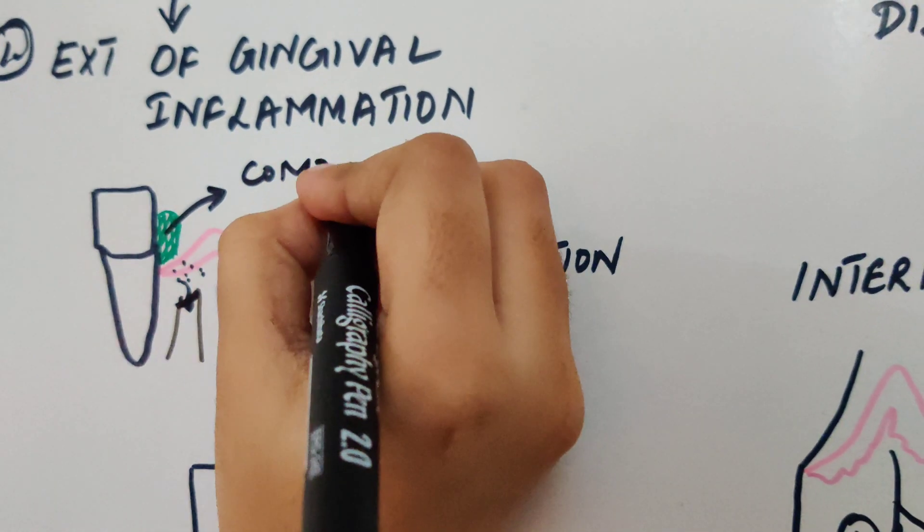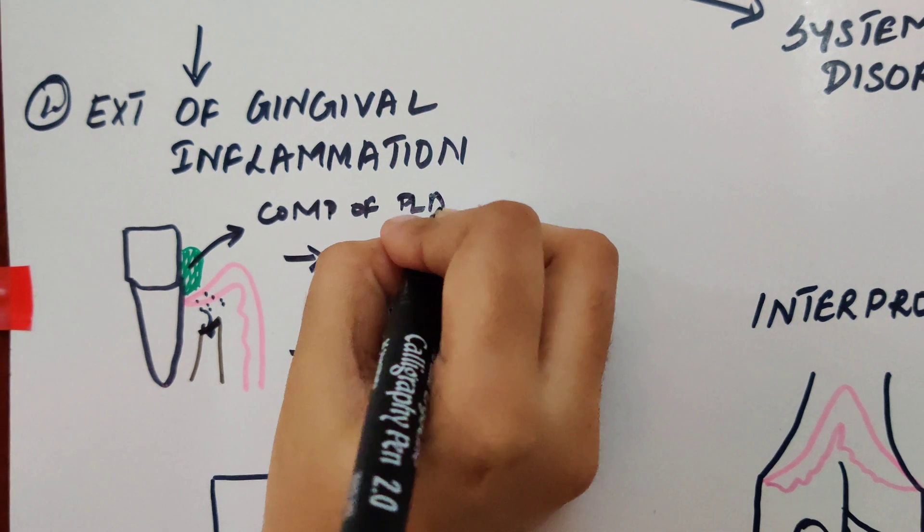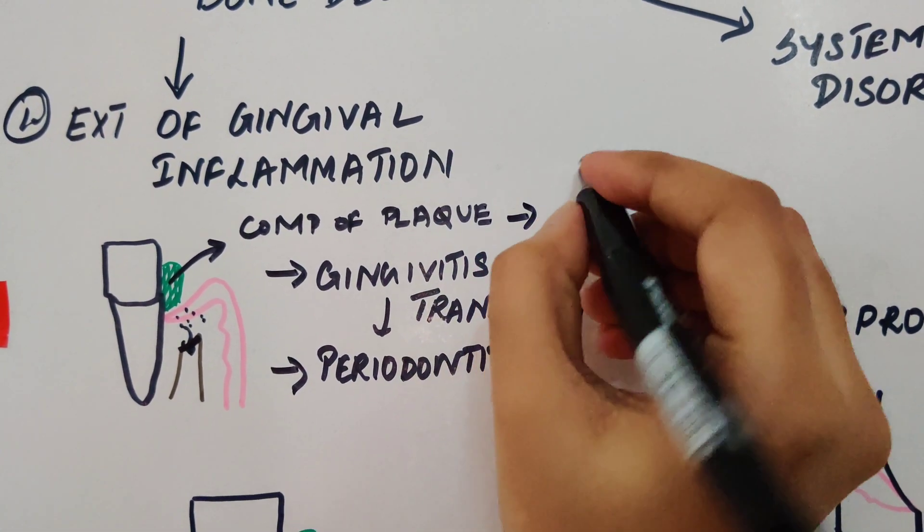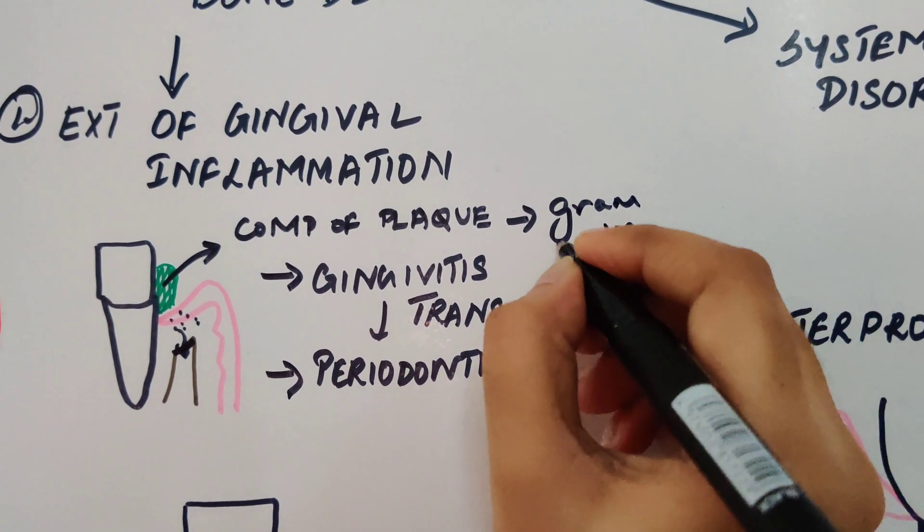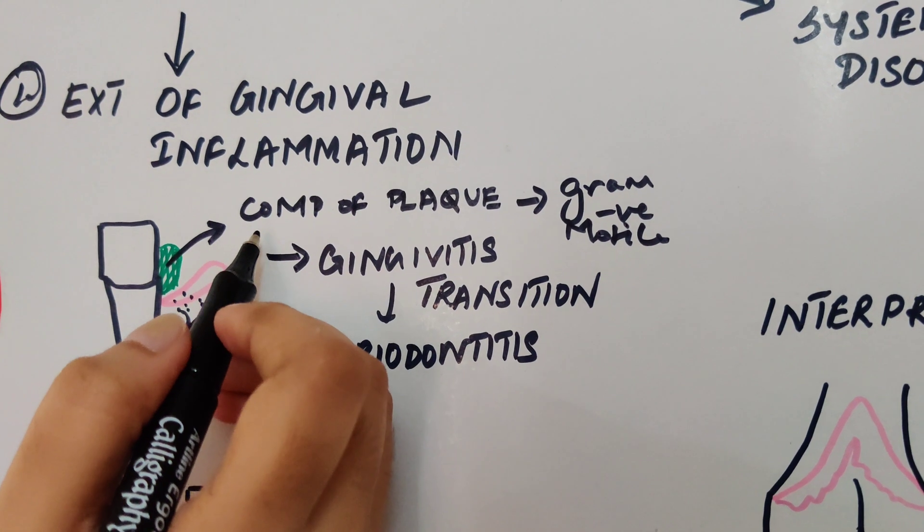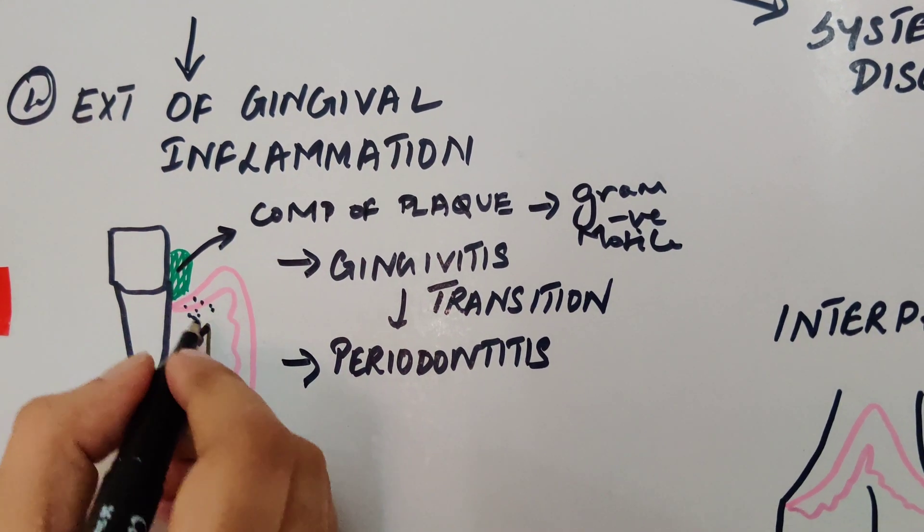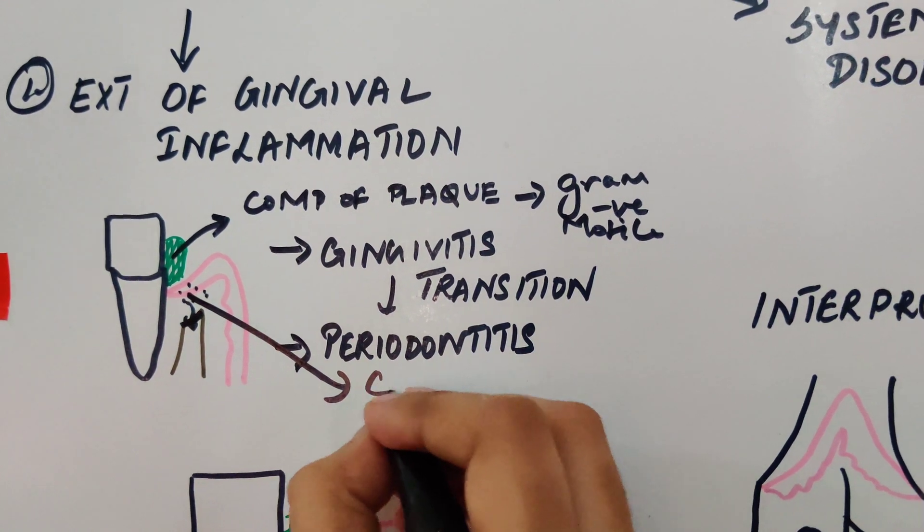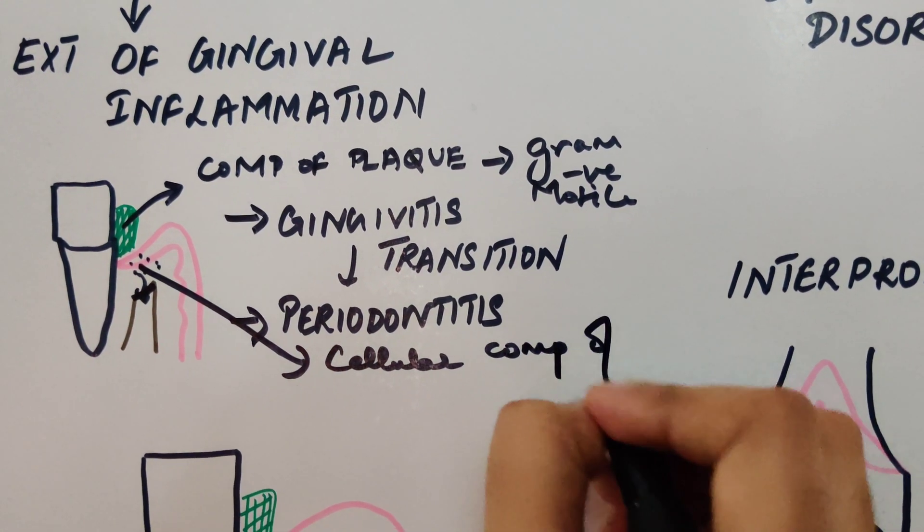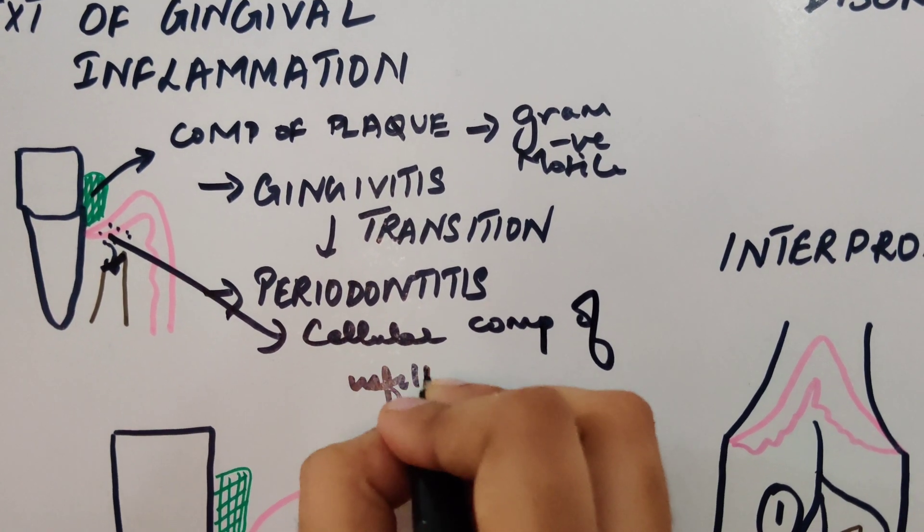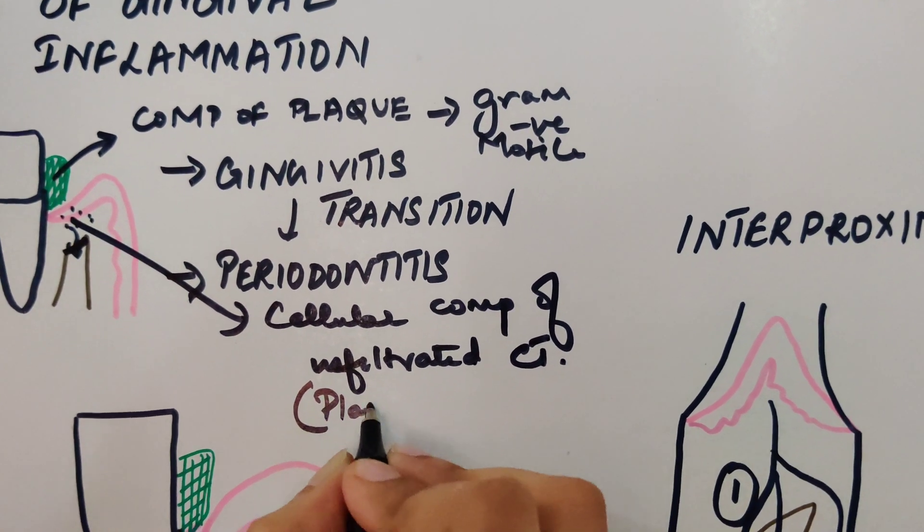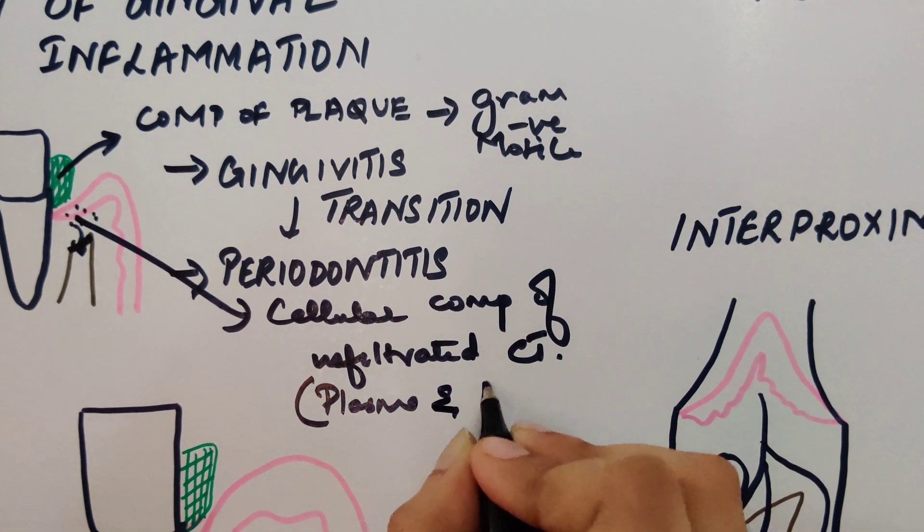One would be composition of your plaque, meaning that there will be more of gram-negative and motile organisms as the disease progresses. Then the second factor would be cellular composition of infiltrated connective tissue, meaning there will be a lot of plasma and blast cells as the disease progresses.